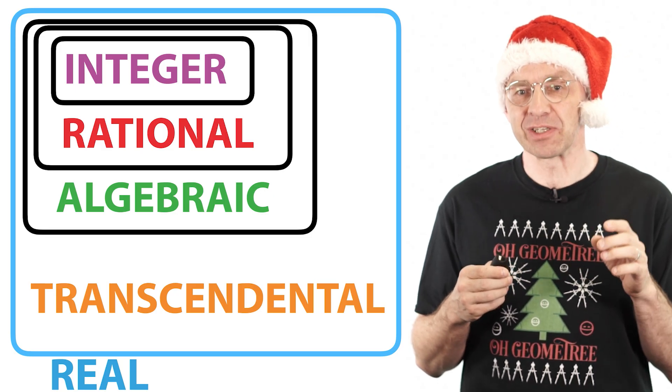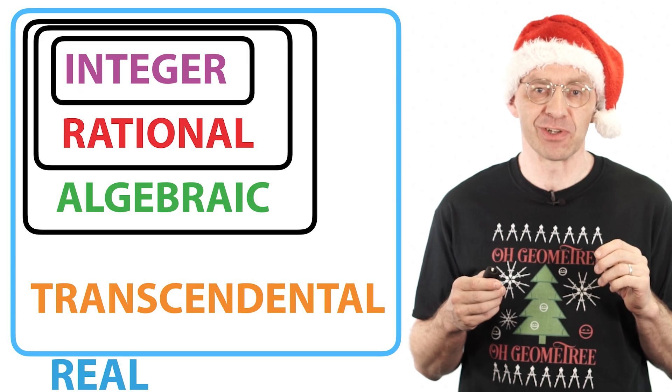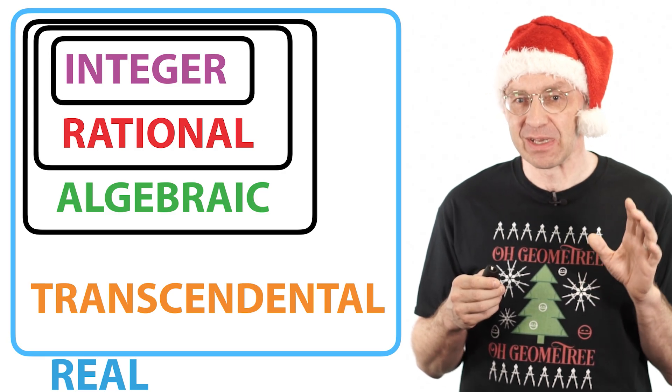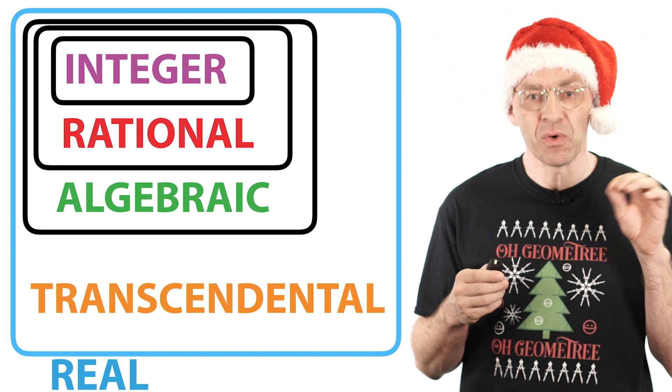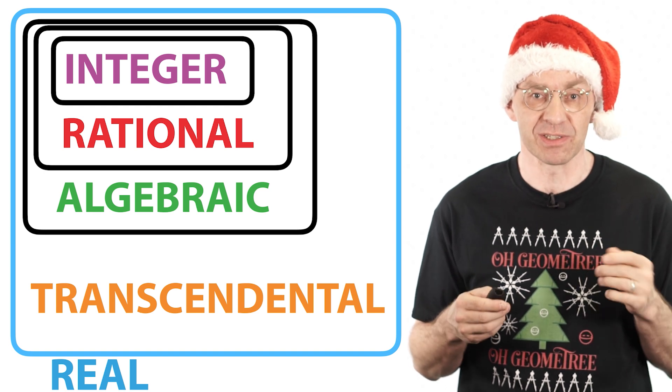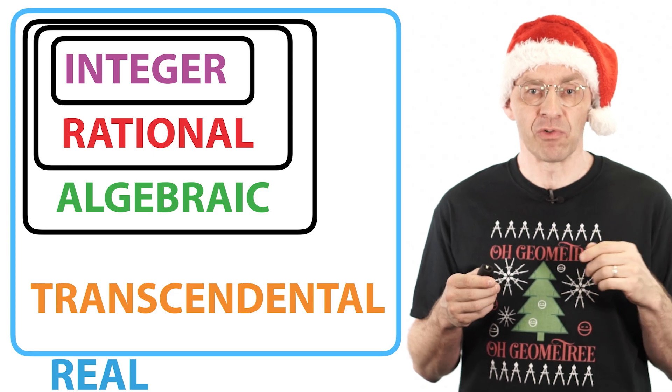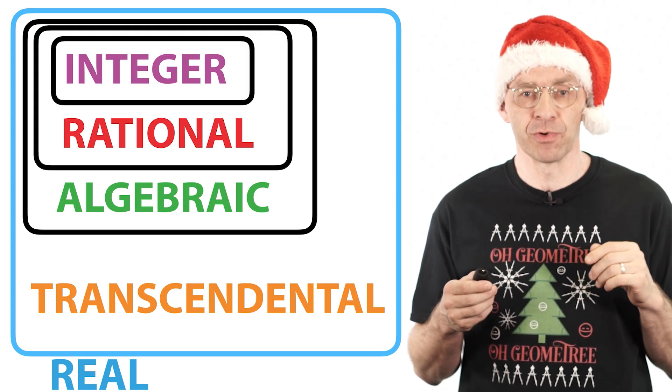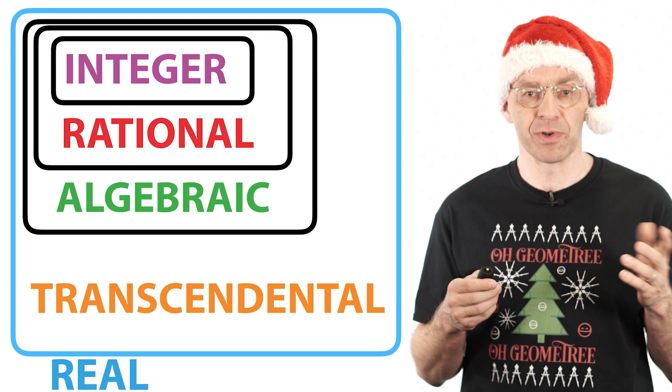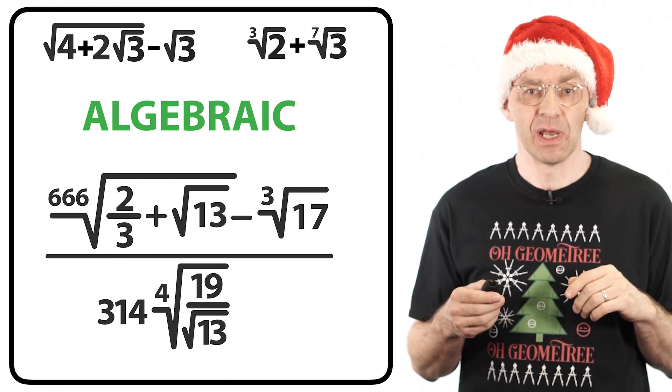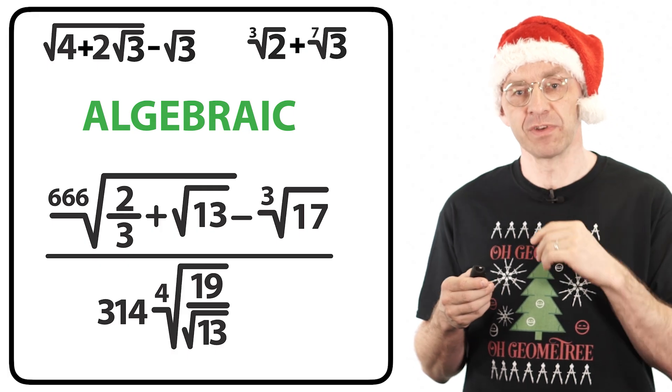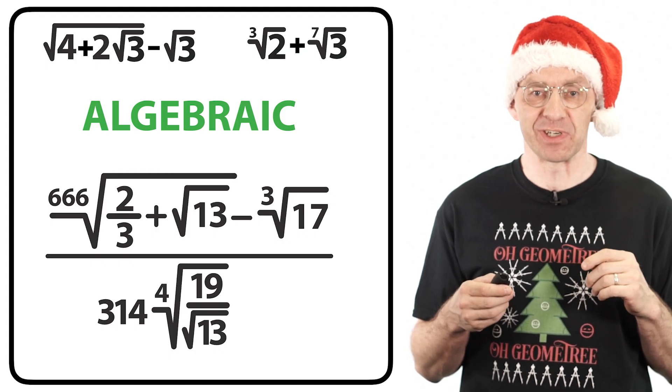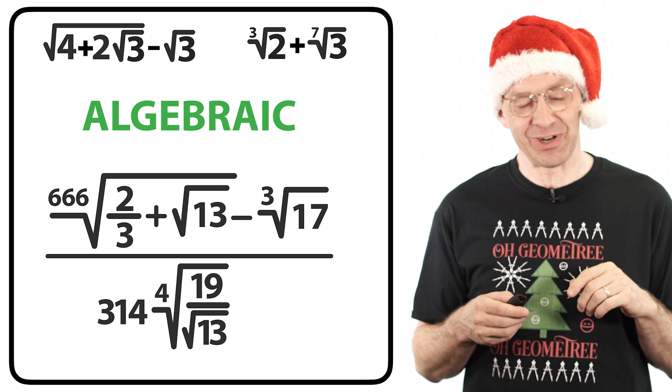But we also have an algebraic confession to make. It's definitely true that the root theorems are super powerful at showing which solutions to polynomial equations are irrational. But there's a grinchy problem. Algebraic numbers are often presented in ways that don't automatically come with one of those special equations. And of course we can't apply our root theorems unless we somehow produce the right polynomial equation.